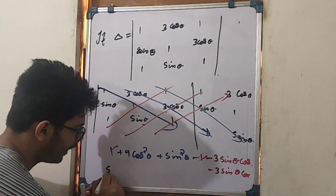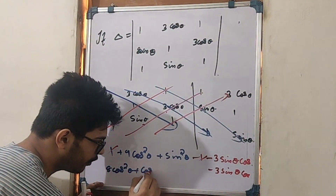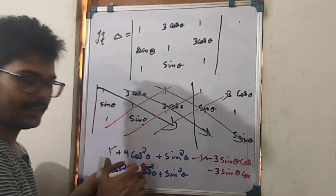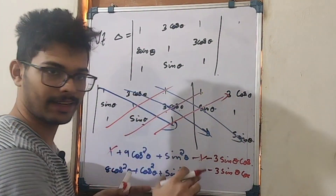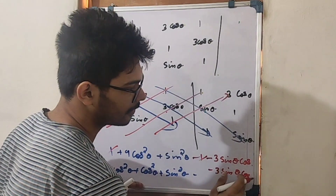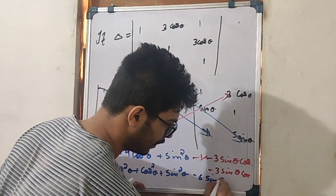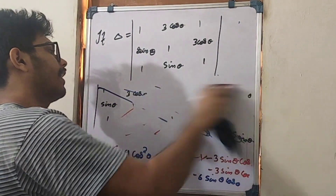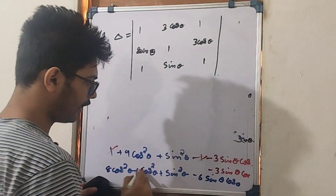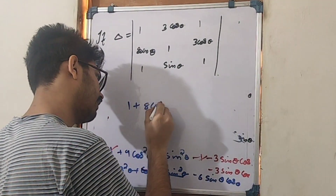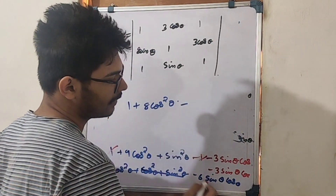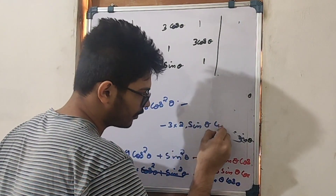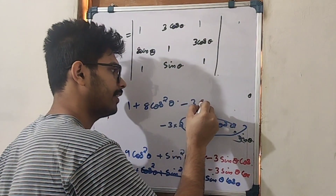We have 8cosθ + cosθ = 9cosθ, and minus 3sinθcosθ minus 6sinθcosθ. Using sin²θ + cos²θ = 1, and 2sinθcosθ = sin2θ, we get minus 3sin2θ.